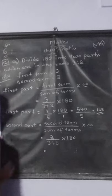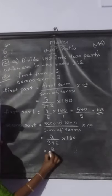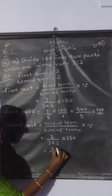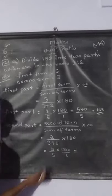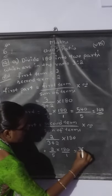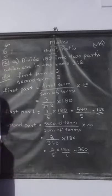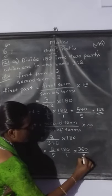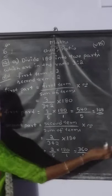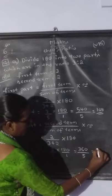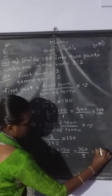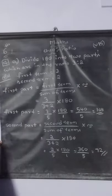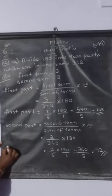Which is equal to 2 divided by 5, into 180. 180 twos are 360, divided by 5. Do the division in the side work — I am writing the direct answer. 5 sevens are 35, remainder 10, 5 twos are 10. So the second part is 72.